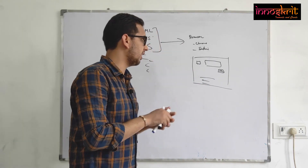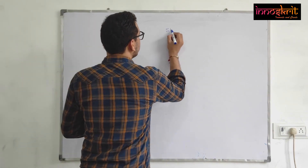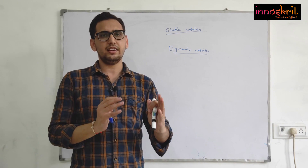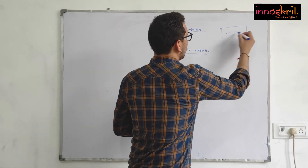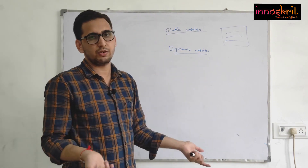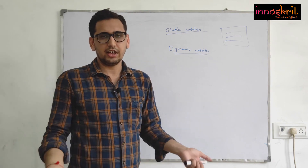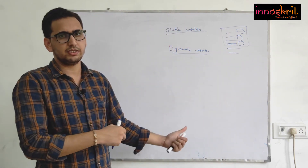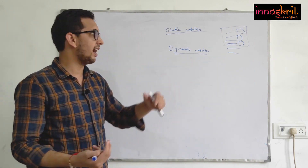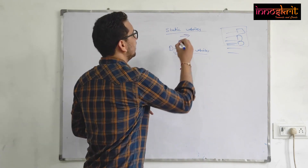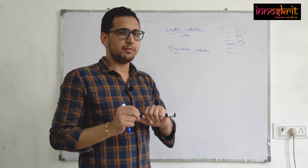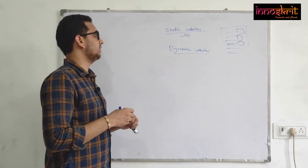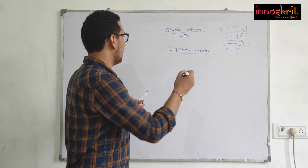There are two kinds of websites: static and dynamic. Static means the content is fixed. For example, your resume website — a site about yourself where the data doesn't change much. You write your description, and even if it changes you go back, update the code, and redeploy. These sites do not need to populate data dynamically based on user interaction.